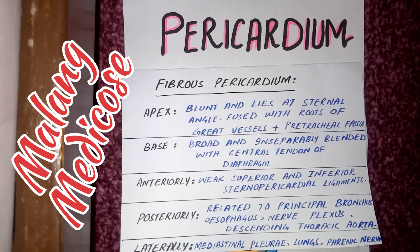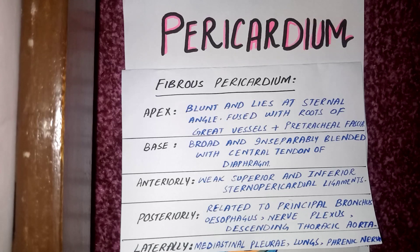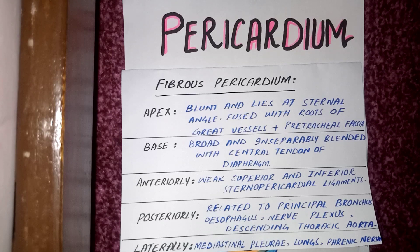Pericardium is a fibroserous sac that encloses the heart and the roots of the great vessels. It does not cover the whole length of the great vessels. This pericardium lies in the middle mediastinum, and it is a combination of fibrous pericardium and the serous pericardium.